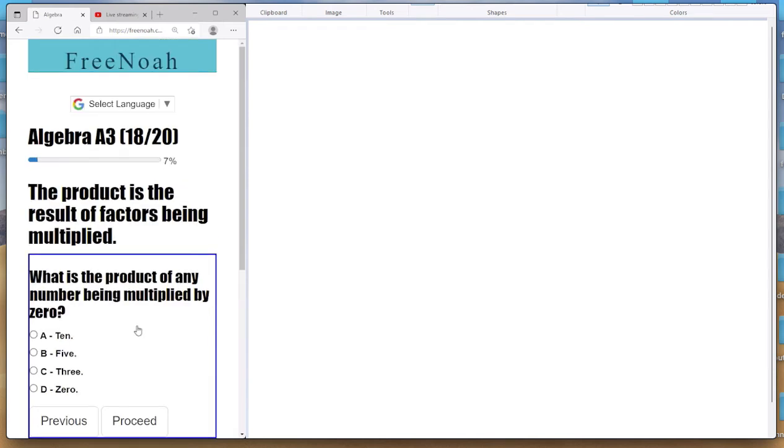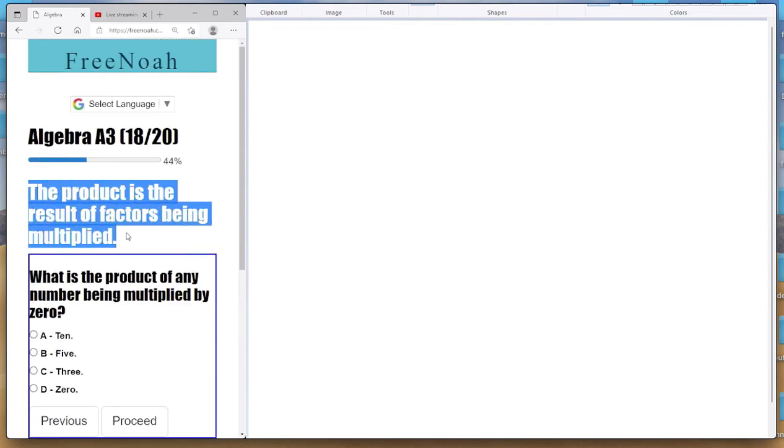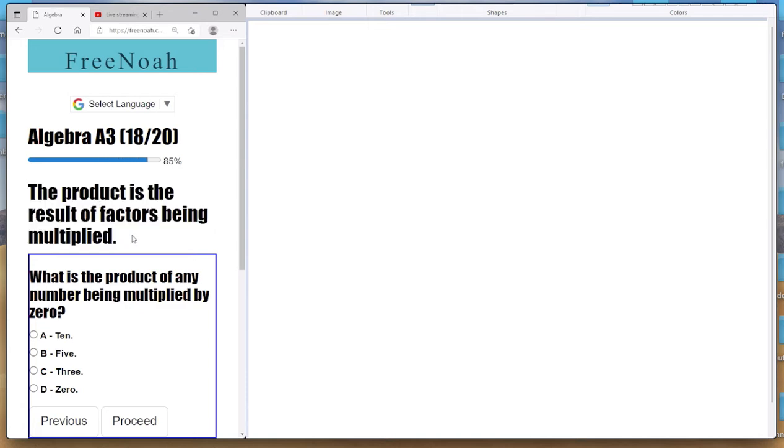What is a product? Alright, the product is the result of factors being multiplied. Interesting. Alright, so here we go. We're talking about product here, right? So, in multiplication,